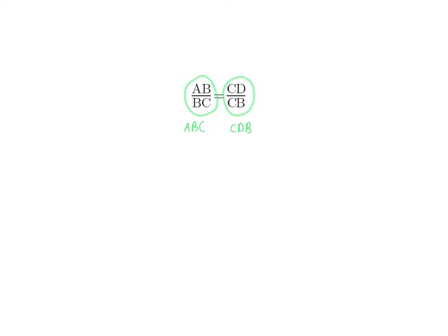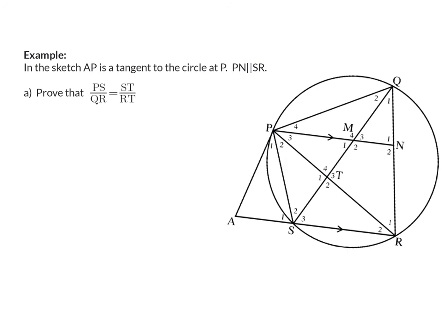Let's have a look at an example. In the sketch, AP is a tangent to the circle at P, and we are given that PN is parallel to SR.